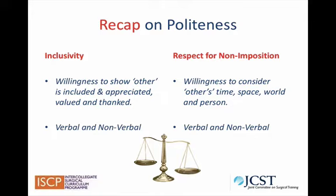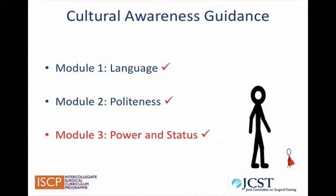The second component is the ability to give consideration to the time, space and world of the other, with minimal imposition. This is called respect for non-imposition, sometimes called negative politeness. These two seemingly opposite and contradictory considerations should be attended to in all interactions. They can be embedded in our verbal language or our body language.